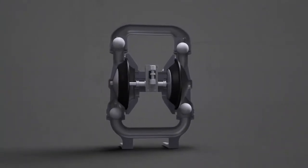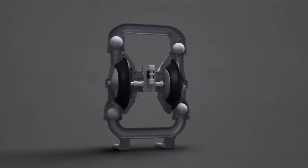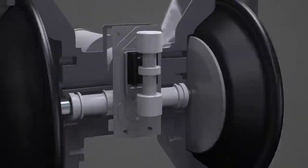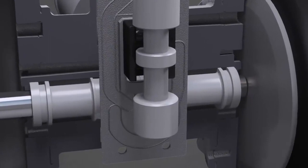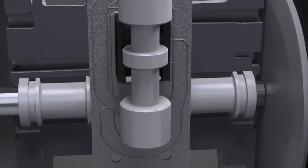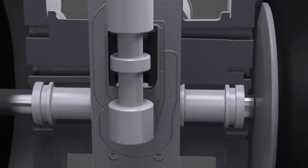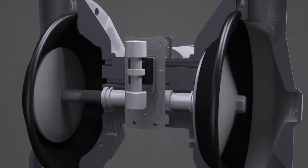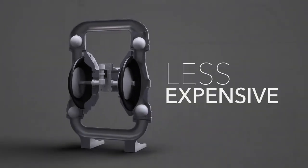The A200 is engineered to outperform the competition while using the fewest number of air valve parts in the industry. In fact, during operation, only four pieces of the air valve move. This makes the A200 easier to maintain, faster to fix if there's a problem, and less expensive to operate overall.